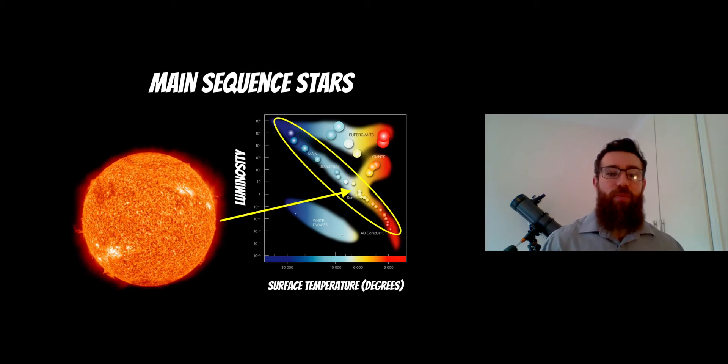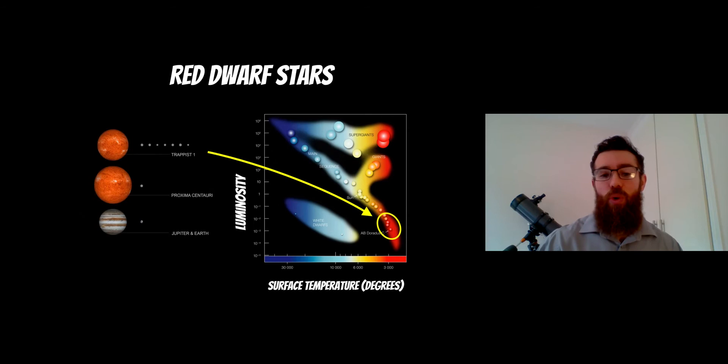Now the bigger the star the hotter the surface temperature and the higher the luminosity. So as they get smaller they become less luminous and the surface temperature decreases. Now red dwarf stars are main sequence stars but they just sit at the lower end of the main sequence. So they sit right at the bottom end, they're red because they have a low surface temperature and they're not very luminous because they're not very big.